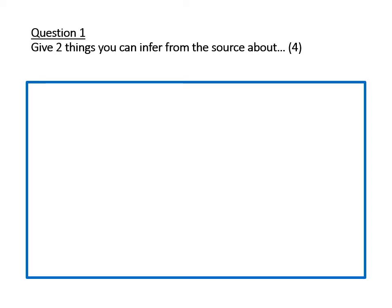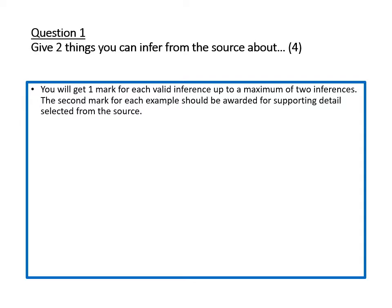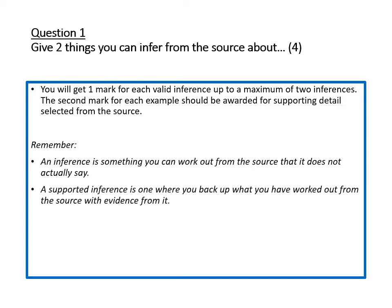Question one always says 'give two things you can infer from the source about' and it's worth four marks. You get one mark for each valid inference, up to a maximum of two. The second mark for each example is awarded for supporting detail selected from the source. An inference is something you can work out from the source that it does not actually say — reading between the lines of a source, whether an image or a written source. A supported inference is one where you back it up with details from the source to show it can be true.